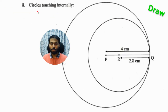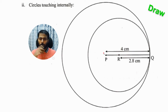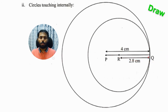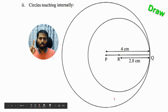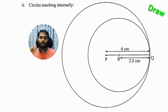For circles touching internally: first draw line PQ where PQ equals 4 cm. Keep the compass pointer on P, pencil on Q, and draw the big circle of radius 4 cm. Then from point Q, mark 2.8 cm to get point R. Keep the compass pointer on R, pencil on Q, and draw a circle of radius 2.8 cm. Your diagram should be neat and accurate.